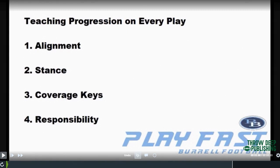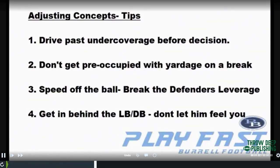This comes right back to the whole teaching progression that exists on every play. Your alignment — where are you lining up? The stance you have. What are your coverage keys? And what is your responsibility? Those four things take zero ability — it doesn't matter if you're the worst player on the team or an all-state player, you can do those four things. What you do after that is your ability, but those four things anybody can do, and we do not accept any failure in those areas.